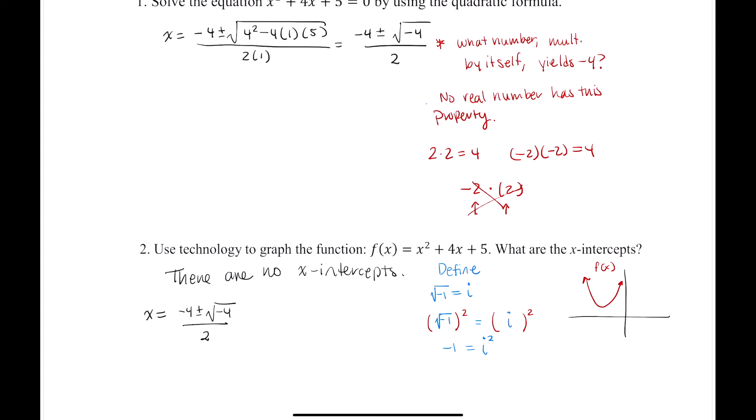So if I have 2i, and I square that, I end up with 2 squared times i squared, which is 4 times negative 1, and that's negative 4. So this number multiplied by itself, that is 2i, gives us negative 4. And this is not a real number. This is called a complex number.